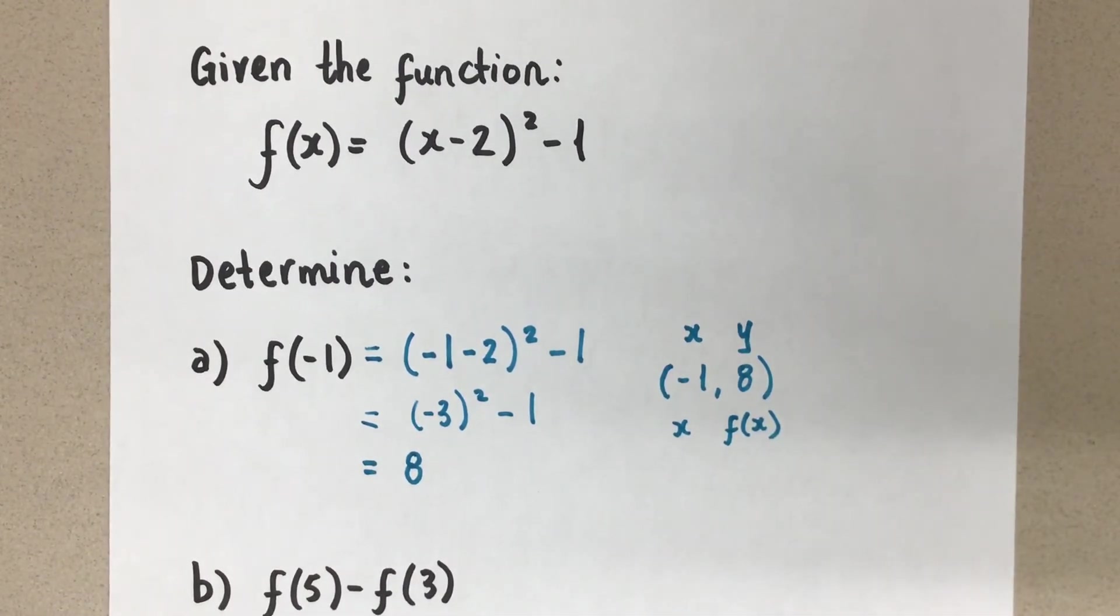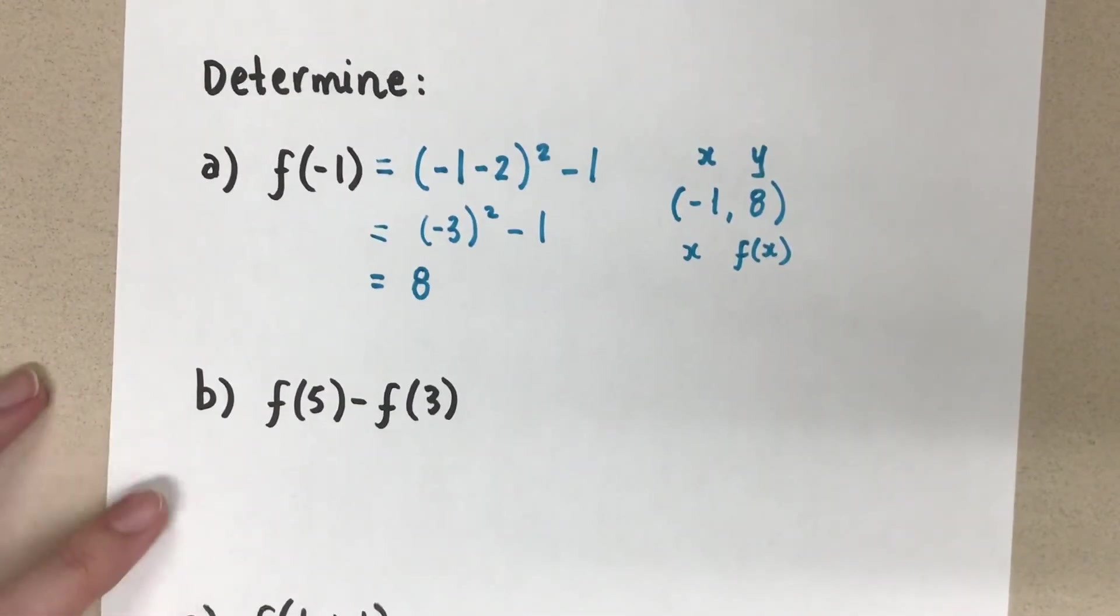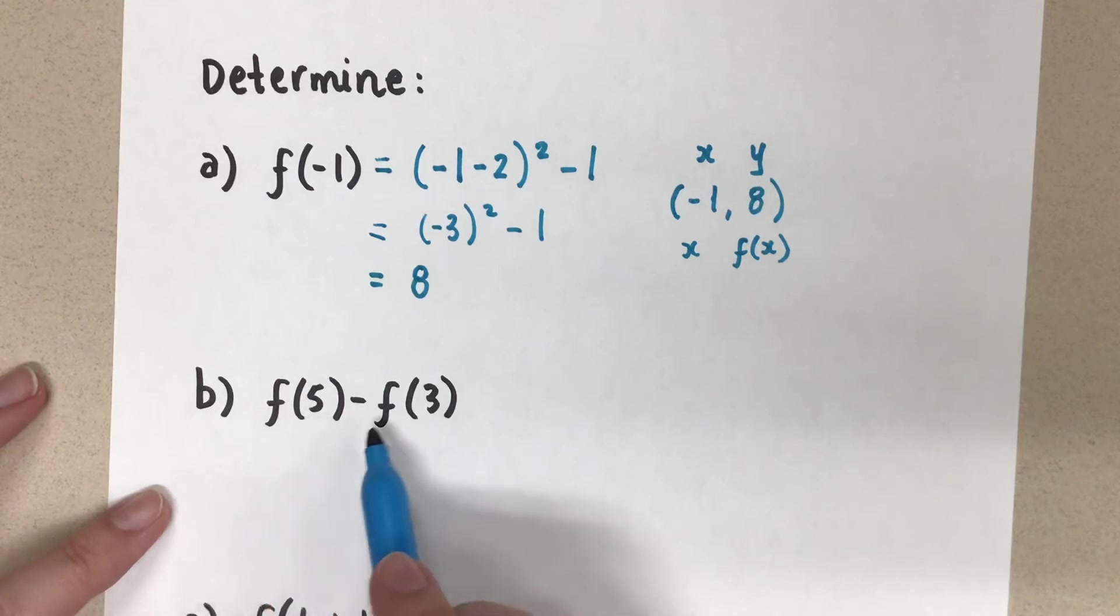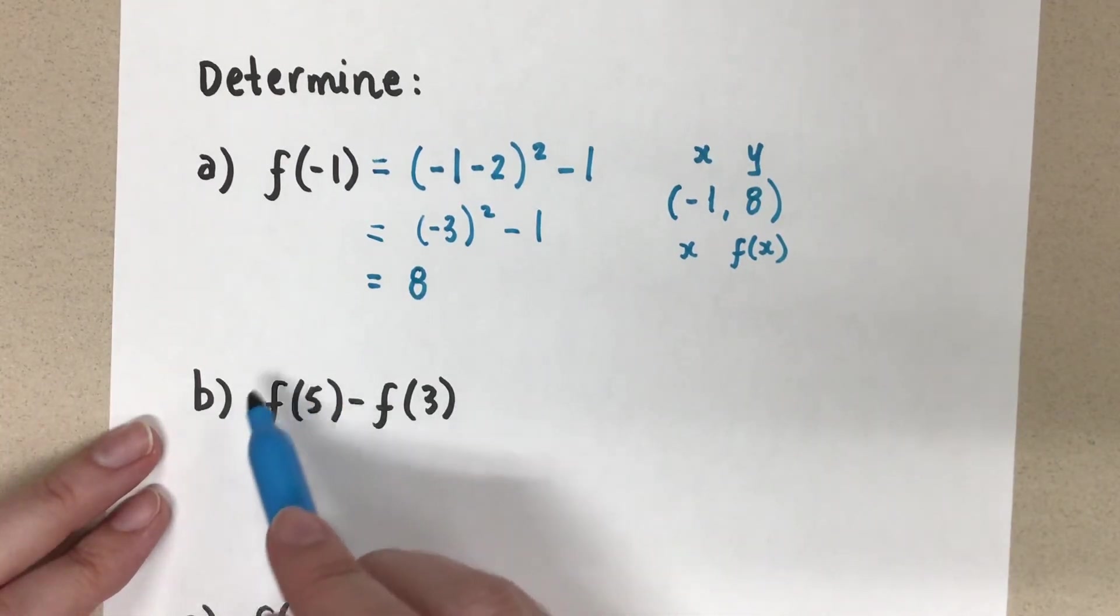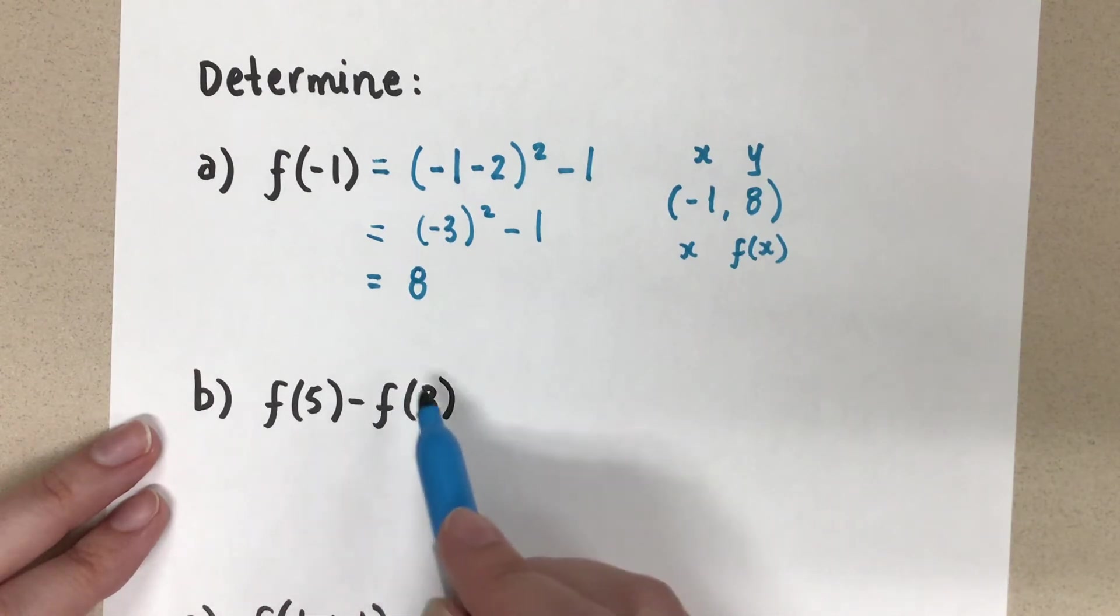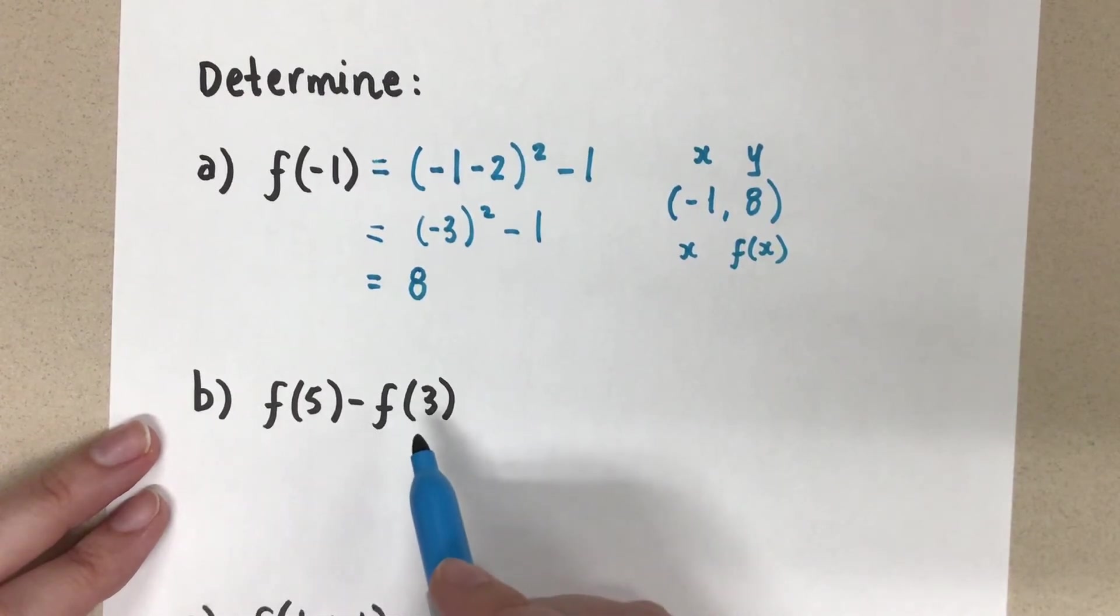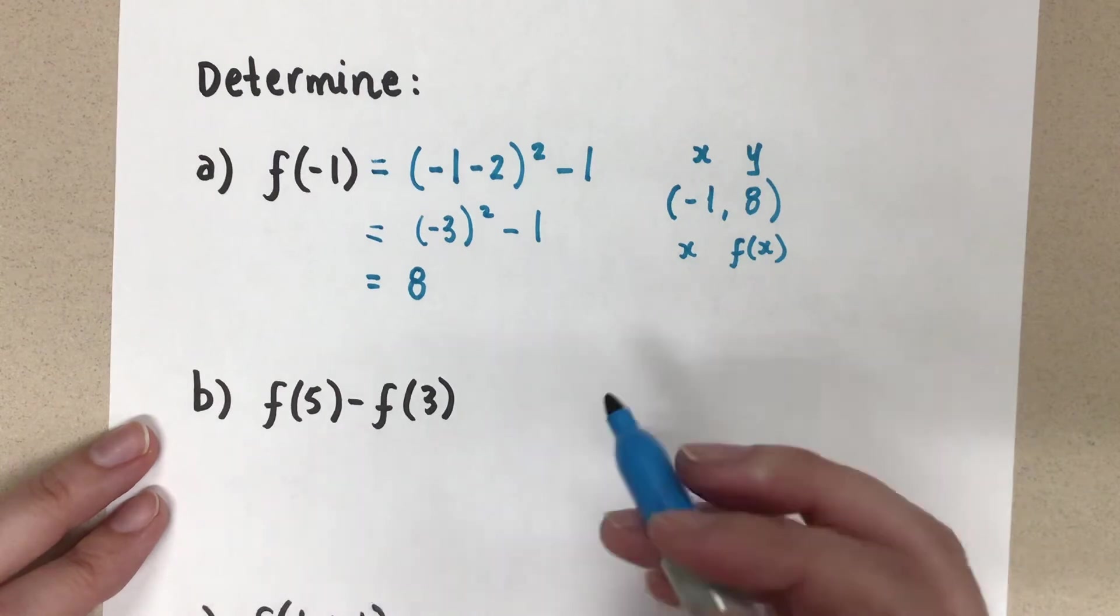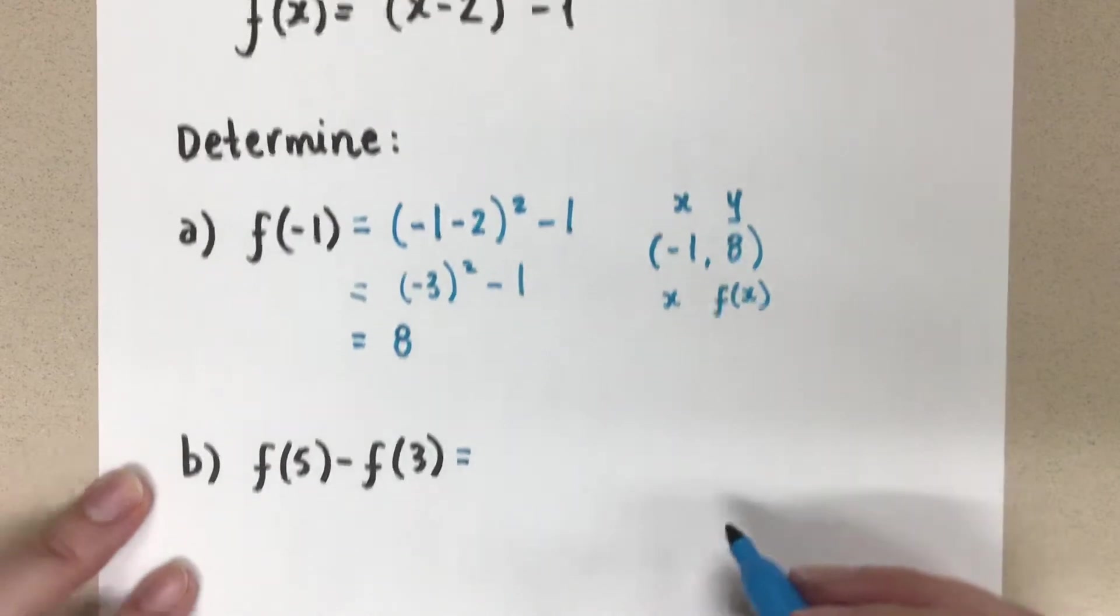Okay, let's look at a couple of other different problems that we might get using function notation. So the next one that I have here is f at 5 minus f at 3. So when you see this, you're going to do the function with the 5 subbed in and then we're going to do the function with the 3 subbed in and we're going to subtract them. So sometimes students like to do these separately and then insert them into this equation. That's fine, I'm going to do it all at once. It's up to you and your comfort level.